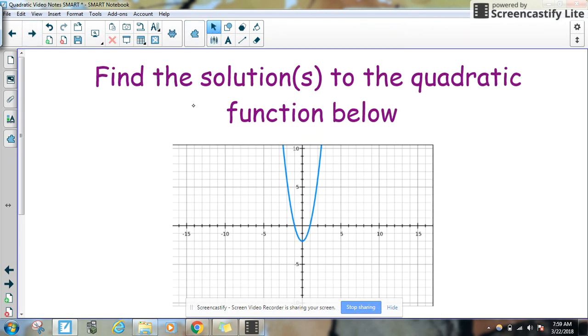Here's the first one. It says find the solution or solutions to the quadratic function below. Well, that's going to be where the quadratic crosses the x-axis, so that's going to be once, twice. We have two places here.